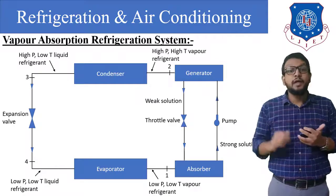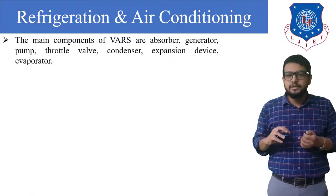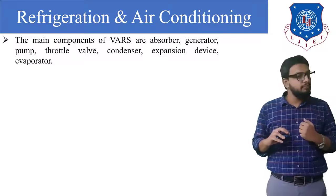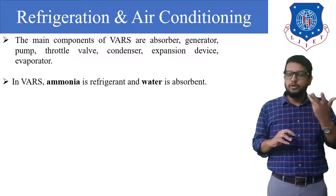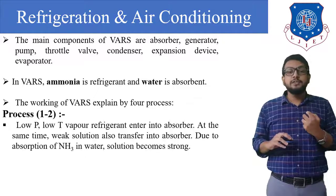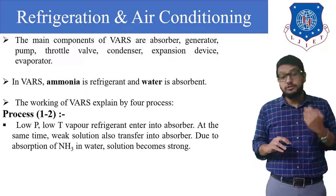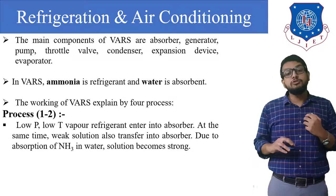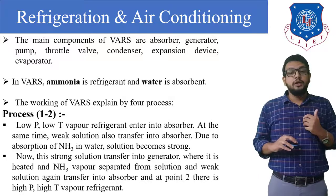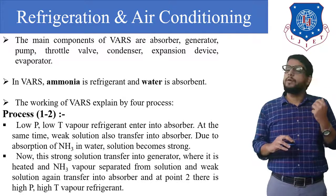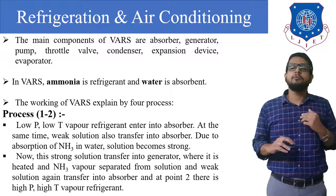The main components of the VAR system are: absorber, generator, pump, throttle valve, condenser, expansion device, and evaporator. Ammonia is the refrigerant and water is the absorbent. In the absorber process (1 to 2), low pressure, low temperature vapor refrigerant enters the absorber; the weak solution also transfers into the absorber and, due to absorption of ammonia in water, the solution becomes strong. That strong solution transfers into the generator where it is heated, ammonia vapor is separated, and the weak solution returns to the absorber.